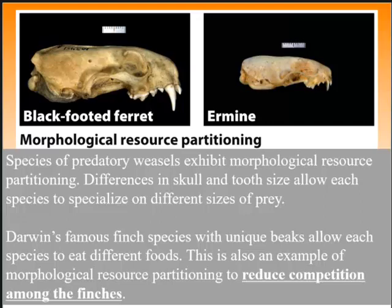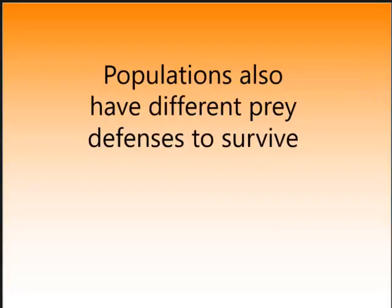Species of predatory weasels exhibit morphological resource partitioning — differences in skull and tooth size allow each species to specialize on different sizes of prey. Darwin's finches with different types of beaks also allowed each species to eat different foods and different seeds — that's an example of morphological resource partitioning, which reduces competition among the animals.